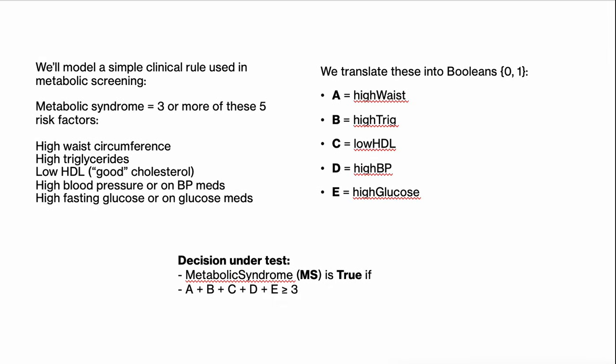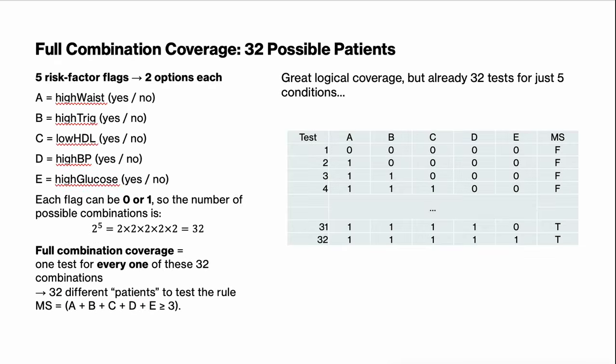If they're already on medication for one of these things, that flips it to one, which is true. If a patient meets three or more of these five criteria, the screening rule flags them as having metabolic syndrome. On the right I've turned this into simple booleans — zero equals false, one equals true, A through E. The business rule boils down to a single line: metabolic syndrome is true if A + B + C + D + E is at least three — so from three to five.